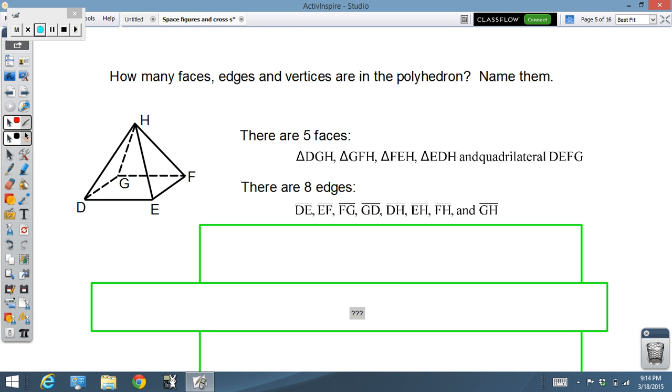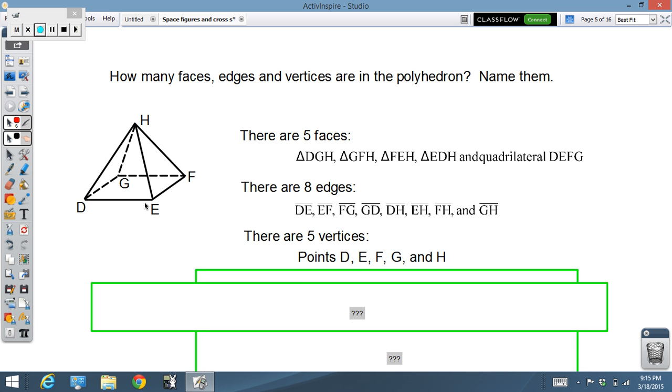Eight edges. We'll mark those up in red here, so you can make sure you see them. Eight edges. One, two, three, four, five, six, seven, eight. And the names of them are listed right here. They are all segments, DE, EF, etc., right? Eight edges. Five faces, eight edges. There are five vertices, and there are points D, E, F, G, and H. Cool?